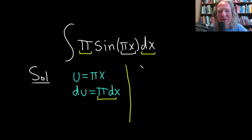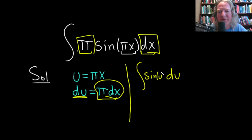So this is going to become the integral of—let's replace the π dx, that's just going to be du. So I'll put it over here. And then we have sine of u, sine of u, because this piece here is our u.